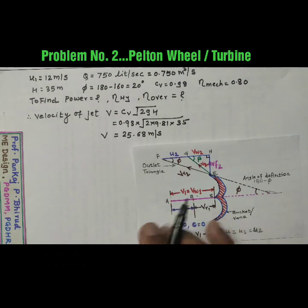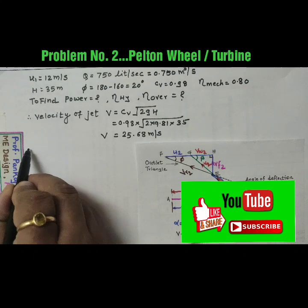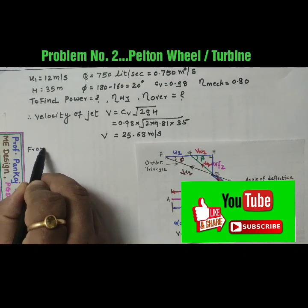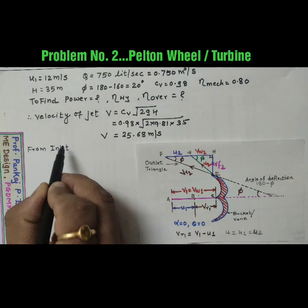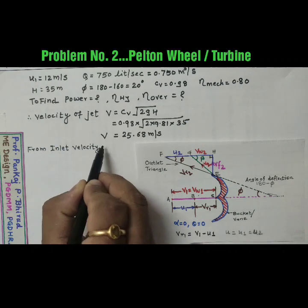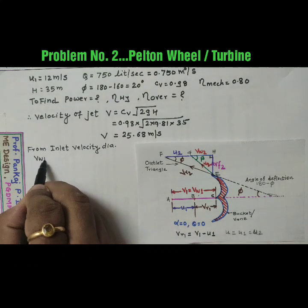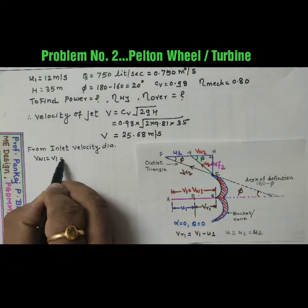So from inlet triangle diagram, from inlet velocity diagram, this V1 equal to Vw1, so Vw1 is equal to V1 and that is 25.68 meter per second.